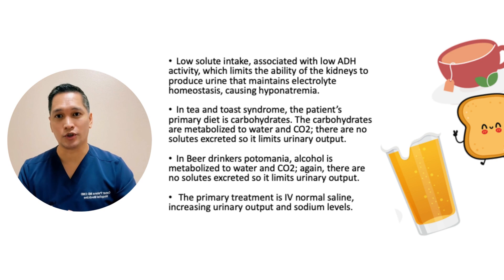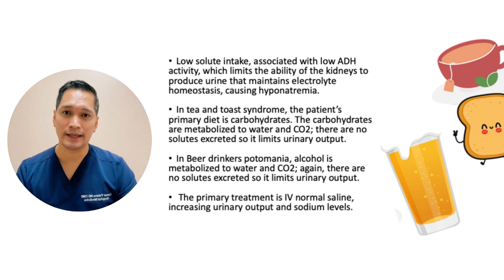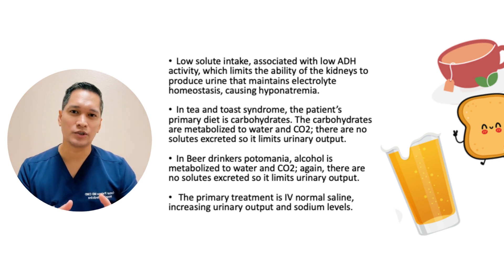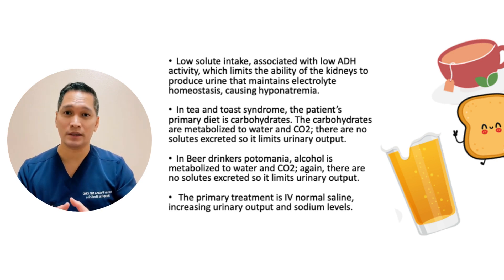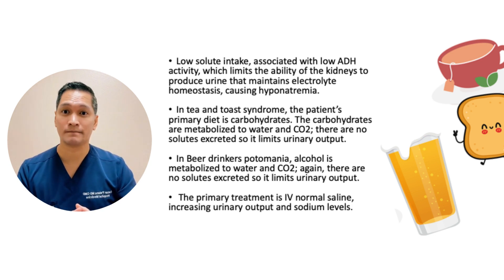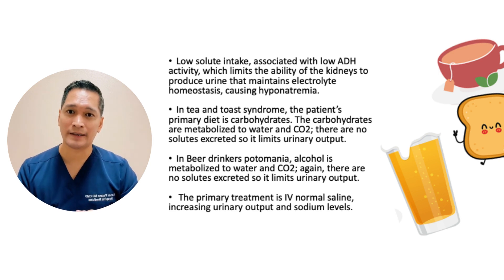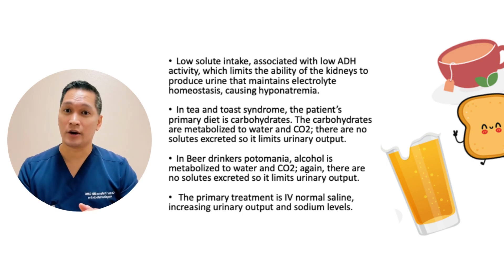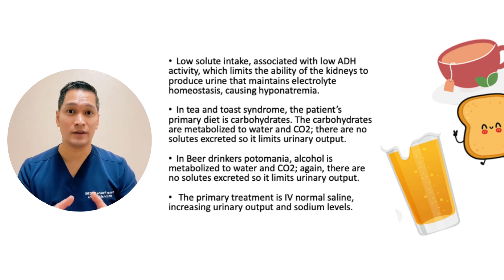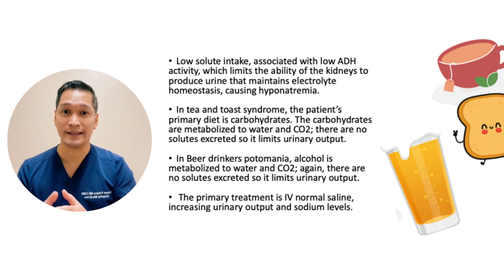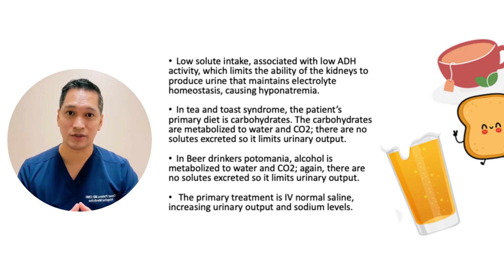In TNT syndrome and beer drinkers potomania, the condition is related to low solid intake, which is associated with low ADH activity, limiting the kidneys' ability to produce urine that maintains electrolyte homeostasis, causing hypernatremia. In TNT syndrome, the patient's primary diet is carbohydrates, which are metabolized to water and CO2 — no solids excreted, limiting urinary output. In beer drinkers potomania, alcohol is also metabolized to water and CO2, again with no solids excreted. The primary treatment is IV normal saline, which will increase urinary output and raise the sodium level.